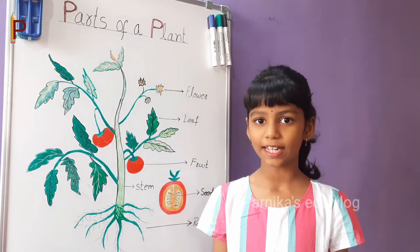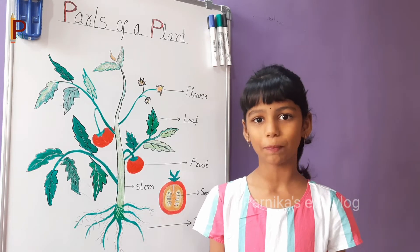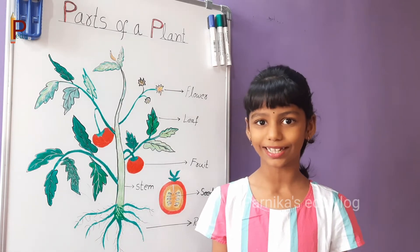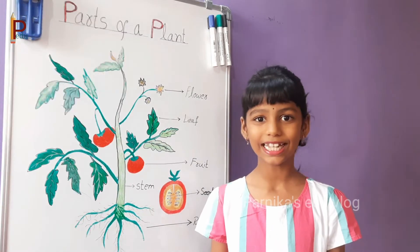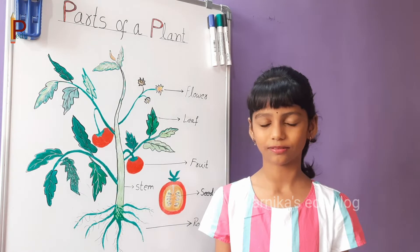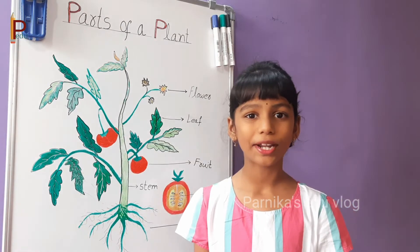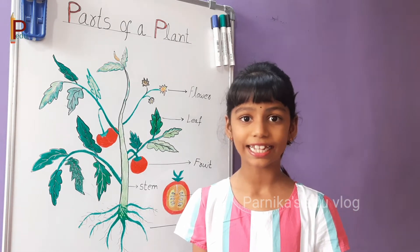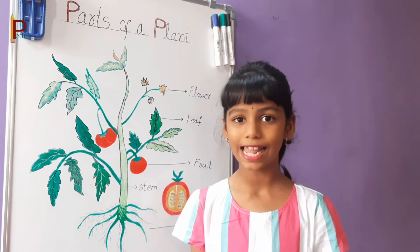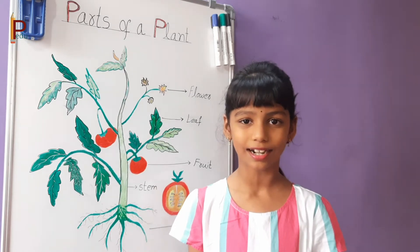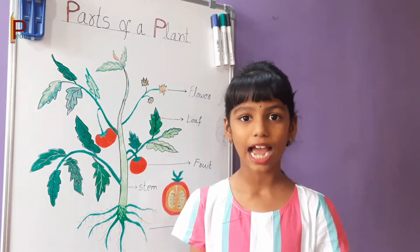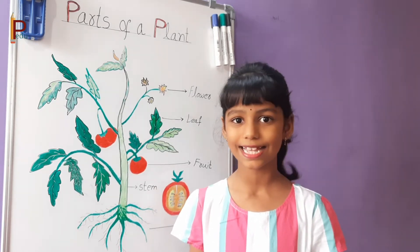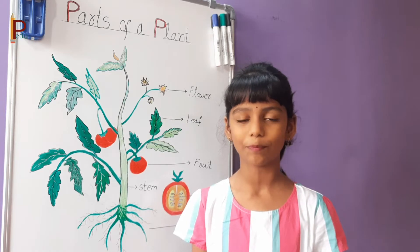Friends, first tell me whether the plant is a living thing or non-living thing. Yes, it is a living thing. Our body has different parts like head, shoulders, legs, etc. Just like our body, plants have different parts. Let us learn about them.